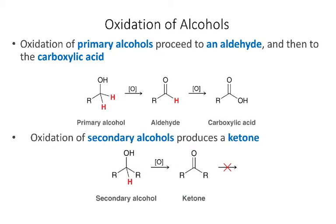In the case of secondary alcohols, since there is only one alpha hydrogen, we can only go one step. So we can only oxidize a secondary alcohol into a ketone. Because there is no remaining alpha hydrogen, another oxidation step is not possible, and the oxidation has to stop at a ketone.